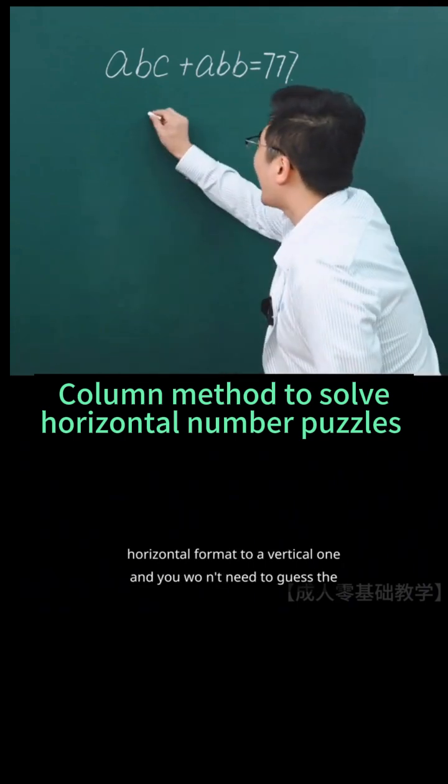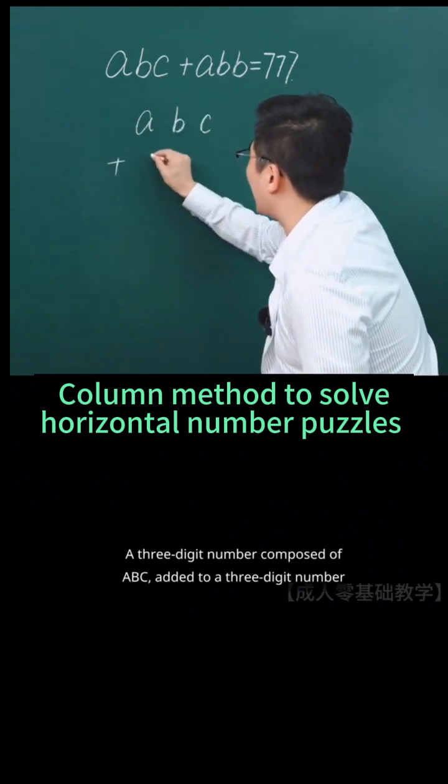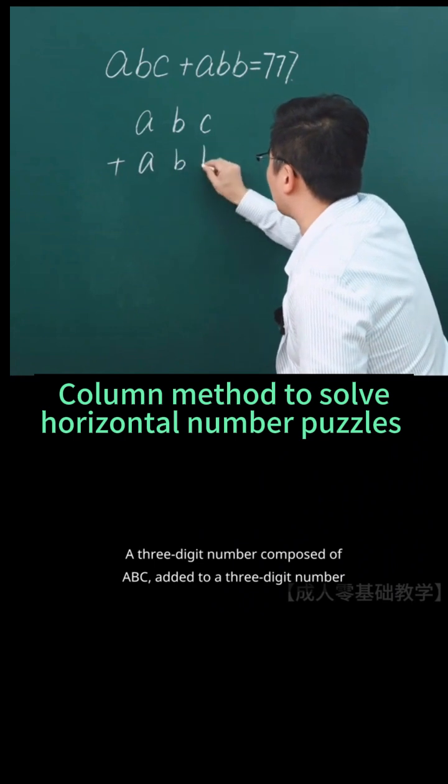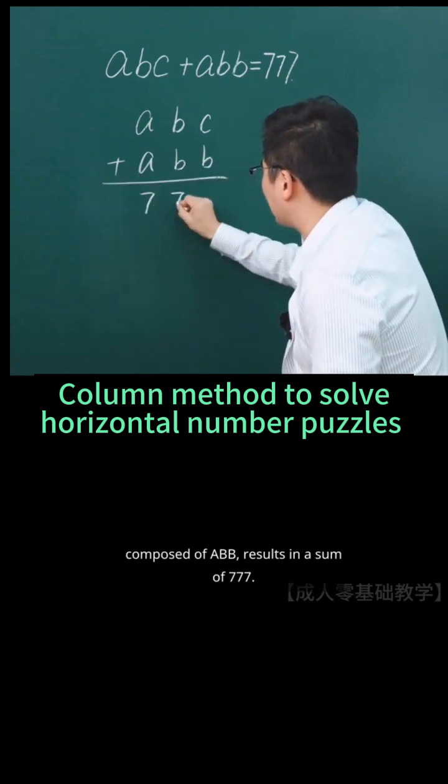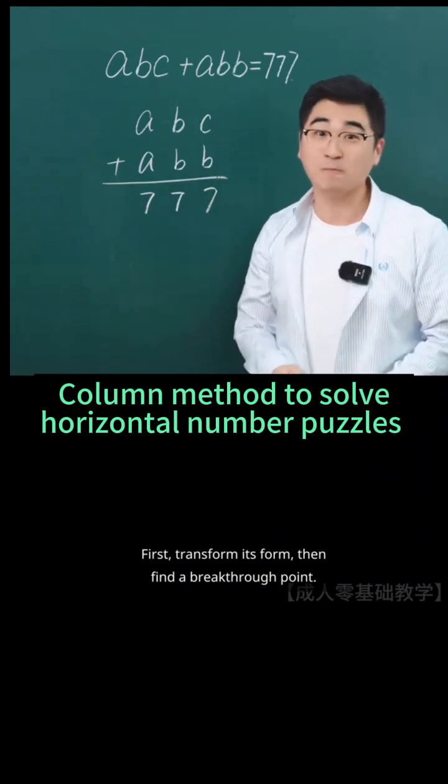A three-digit number composed of ABC added to a three-digit number composed of ABB results in a sum of 777. First, transform its form, then find a breakthrough point.